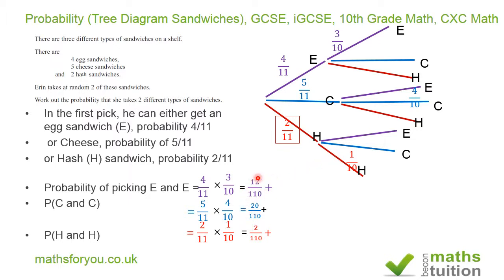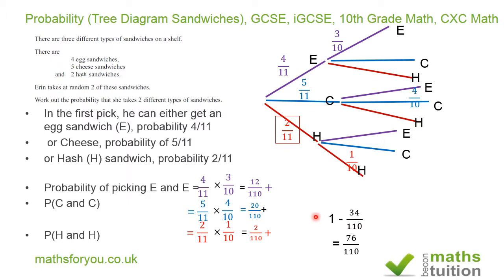All three of those give us the probability of picking two sandwiches of the same type. Adding 12, 20, and 2 gives 34, so the probability of picking two sandwiches of the same type is 34 over 110. It then follows that the probability of picking two sandwiches of different types is 1 minus 34 over 110, which equals 76 over 110.